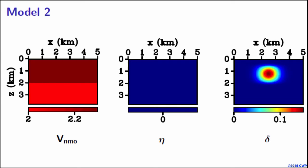This model is very similar to one you've seen. We have a Gaussian anomaly in delta, and the actual value is reaching 0.15 in the center of the anomaly.